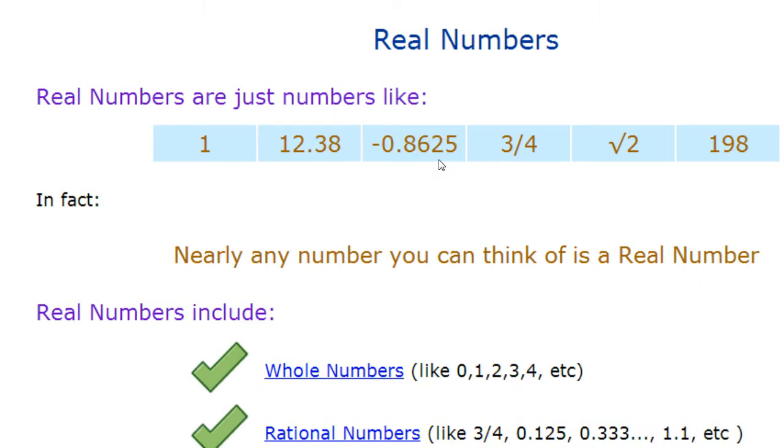Real numbers. You have to remember real numbers are pretty new and they've been around forever but we just didn't put the name of real to them because we didn't have any designation of what wasn't real, like imaginary, and you'll learn that more later. But real numbers are just numbers like 1, 12.38, negative 0.8625, 3 fourths, root 2, 198.